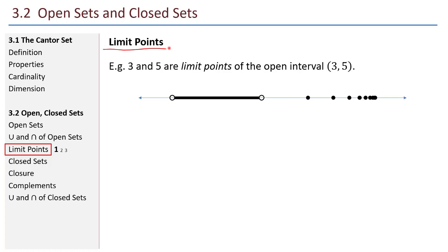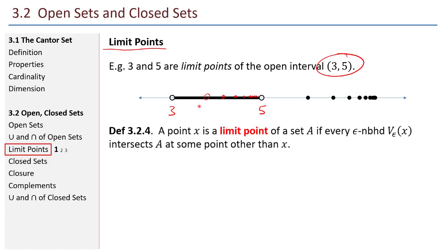Let's talk about limit points. Here's a quick example before I even define it: 3 and 5 are limit points of the open interval from 3 to 5. I can find elements in that interval that get arbitrarily close to 5 — 5 is the limit of points within that interval, and so is 3. Here's the official definition: a point x is a limit point of a set A if every epsilon neighborhood about x intersects A at some point other than x.